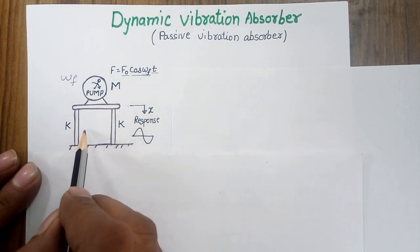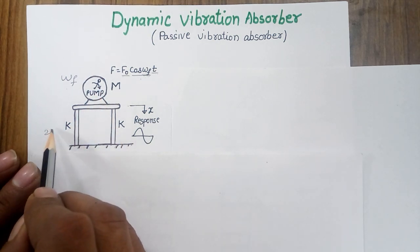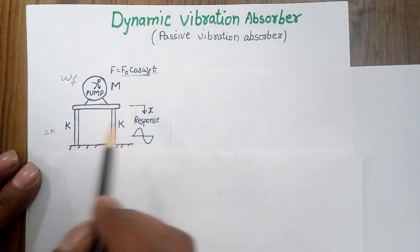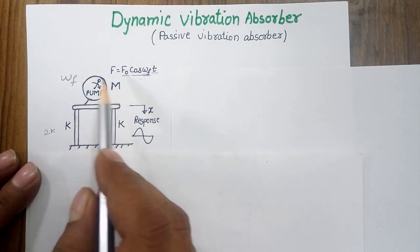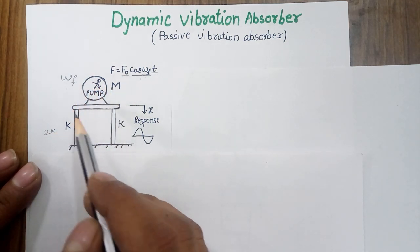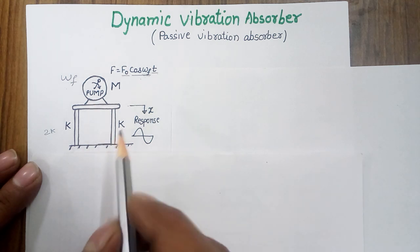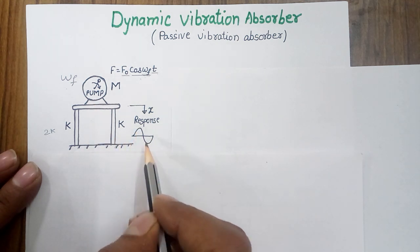I am assuming M is the mass of the pump and k is the stiffness, so the total stiffness may be 2k. When I calculate the response of this system using the forced vibration philosophy, I find that the response is coming with a significant amplitude.